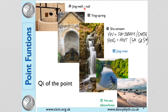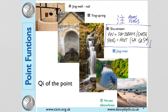From the Shu points we have the Jing-Well points where the Qi bubbles to the surface, the Ying-Spring points where it starts to flow, and what we're interested in is the Shu-Stream points where the Qi flows. In the case of the Yin Yuan source points, this is the same point as the Shu-Stream point and the Earth point. The Yang Yuan source points are the next point — either the fourth, or in the case of the gallbladder, the fifth point on the channel.